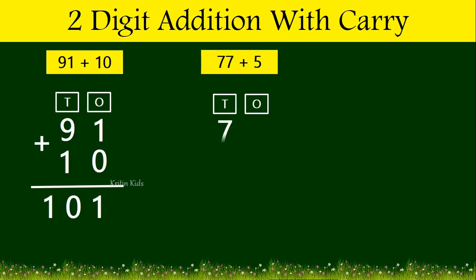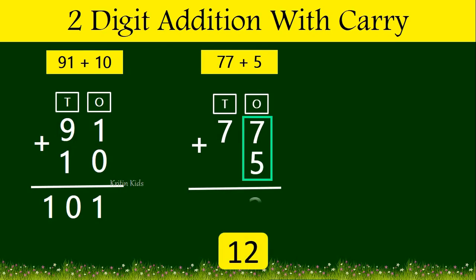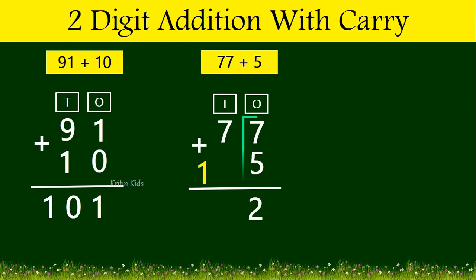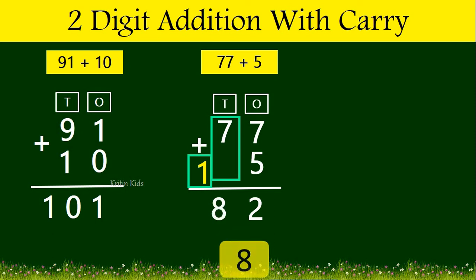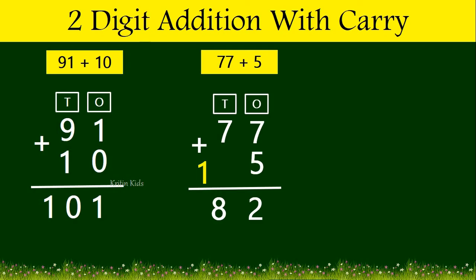Now let's take another example: 77 plus 5. Here, 7 plus 5 gives us 12, of which we only write 2 at the ones position and 1 we take as carry. Then at the tens position it is 7 plus 1, which gives us 8. So 77 plus 5 gives us 82.